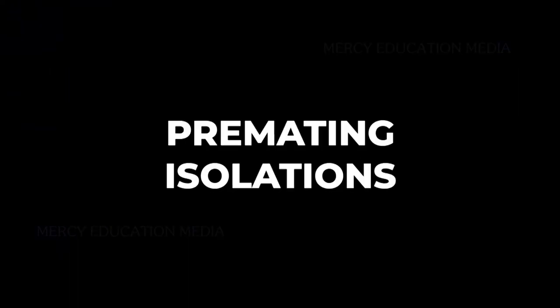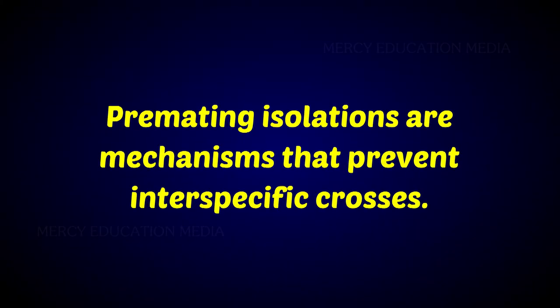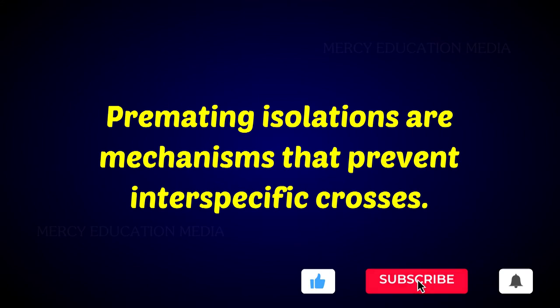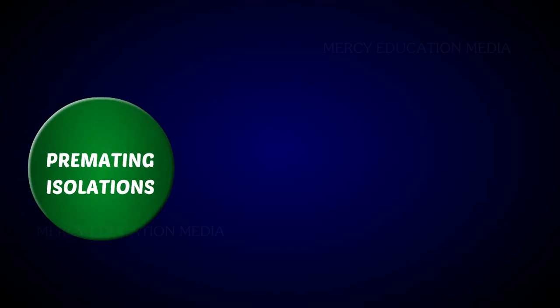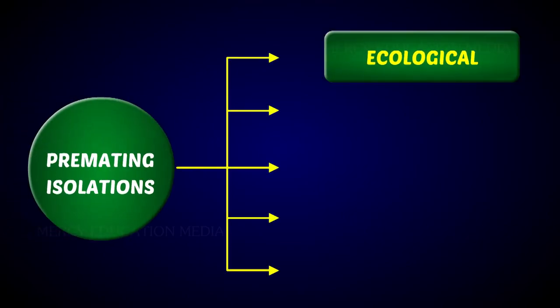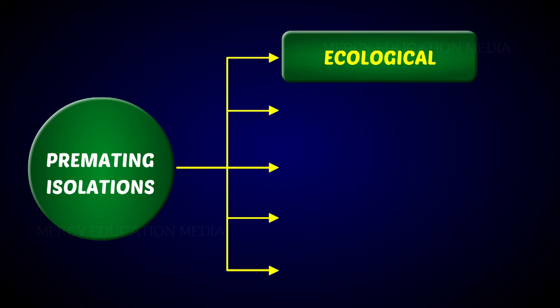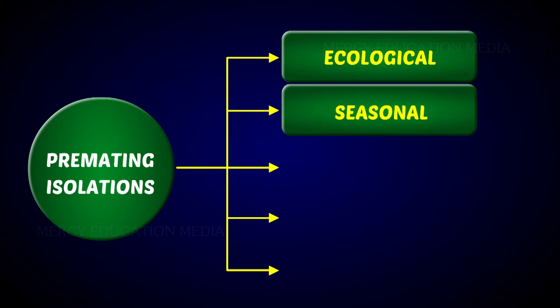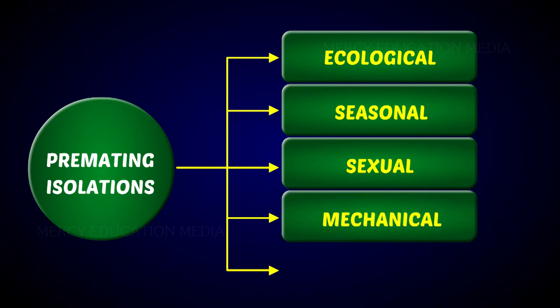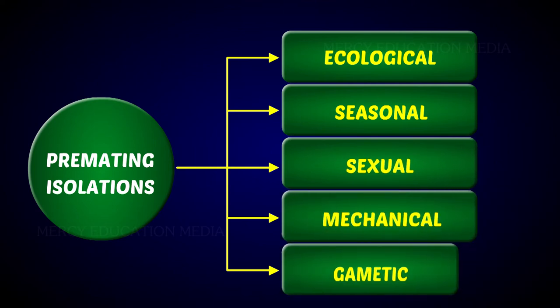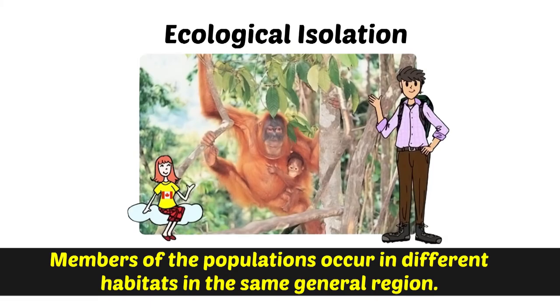What are premating isolations? Premating isolations are mechanisms that prevent interspecific crosses. The various premating isolations are ecological, seasonal, sexual, mechanical, and gametic. What is ecological isolation?